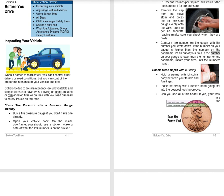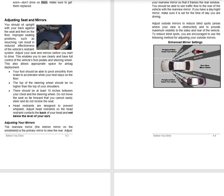Check tread depth with a penny: hold a penny with Lincoln's body between your thumb and forefinger, and place it with Lincoln's head going first into the deepest-looking groove. If you can see all of his head, your tires are too worn — don't drive on them and make sure to get them replaced. Adjusting Seat and Mirrors: You should sit upright with your back against the seat and feet on the floor. Improper seating positions such as slouching can result in reduced effectiveness of the vehicle's restraint system. Adjust your seat and mirrors before you start to drive. This enables you to see clearly and have full control of the vehicle's foot pedals and steering wheel, and allows appropriate space for airbag deployment. Your foot should be able to pivot smoothly from brake to accelerator while your heel stays on the floor. The top of the steering wheel should be no higher than the top of your shoulders. There should be at least 10 inches between your chest and the steering wheel. Do not move the seat so far forward that you cannot easily steer and do not recline the seat. Adjust head restraints so the head restraint contacts the back of your head and not below the level of your ears.